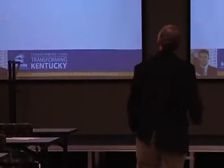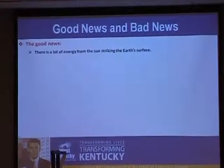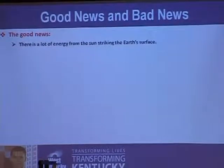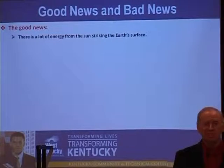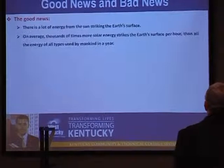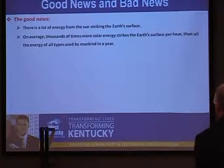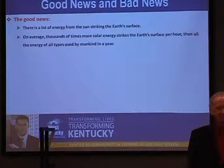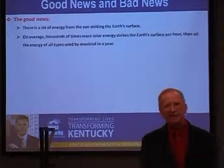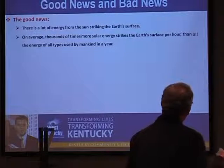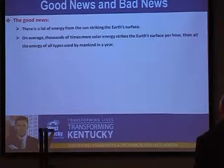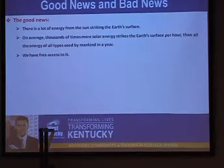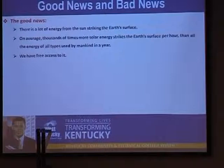First the good news: there's a lot of energy from the sun striking the Earth's surface. Much more so than most people imagine. On average, thousands of times more solar energy strikes the Earth's surface per hour than all of the energy of all types used by mankind in a year. Obviously where you're at is dark half the time, but this is still a big deal. There's a lot of energy out there, and it's free.